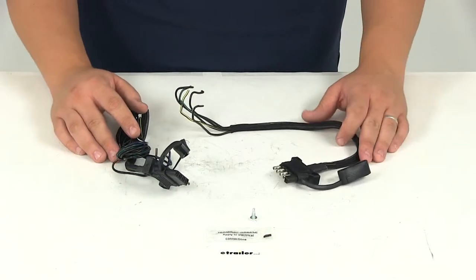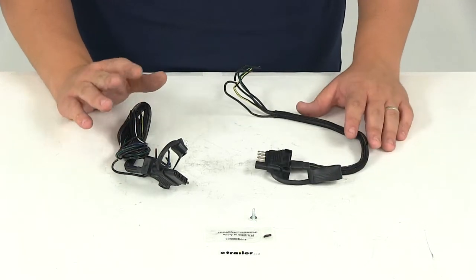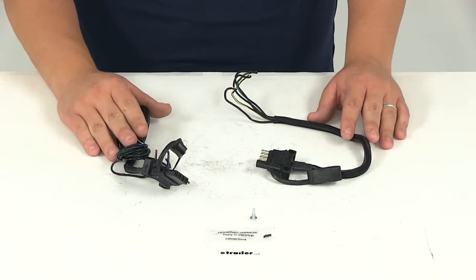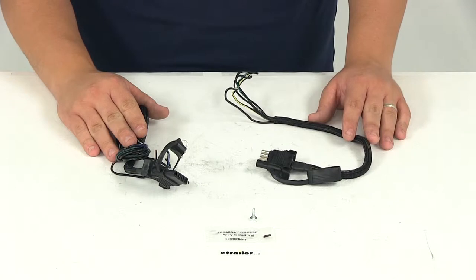Today we'll be reviewing part number HM47890. This is the Hopkins Endurance five-way flat trailer wiring kit. The wiring kit includes the vehicle end connector and the trailer end connector.